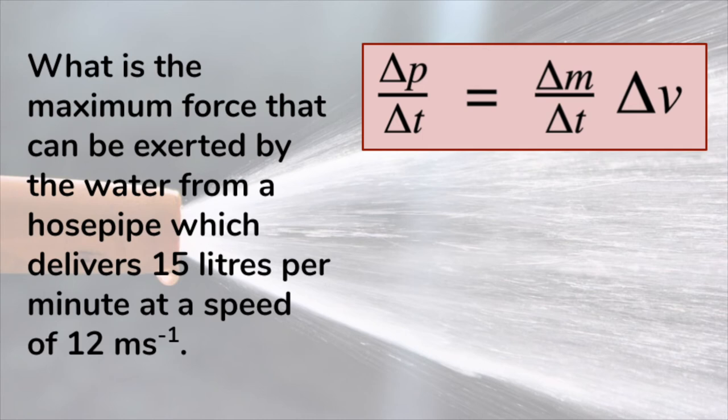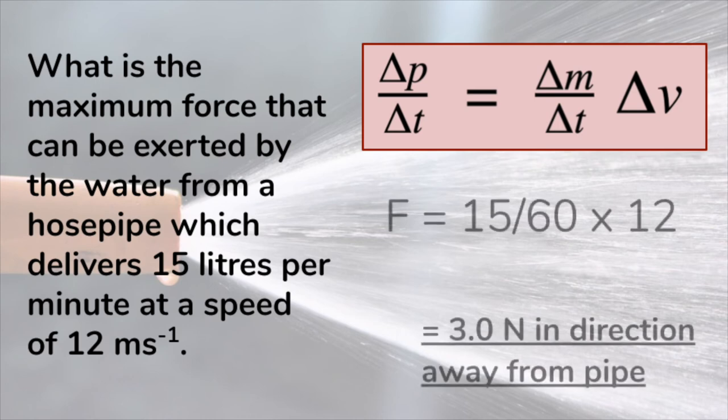One liter of water has a mass of one kilogram, and we're spraying 15 liters every minute. So 15 kilograms of water in 60 seconds slows down from 12 to 0, and it exerts a force of 3 Newtons. If you're holding the hose pipe, you'll feel a force, and due to Newton's third law, you know that this is equal and opposite force exerted by the water on the pipe.